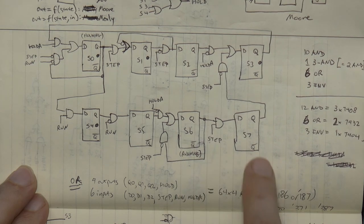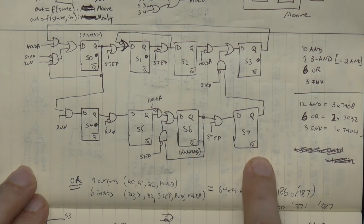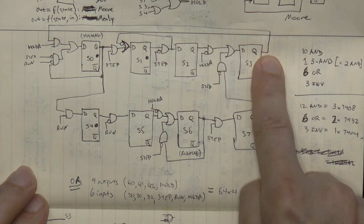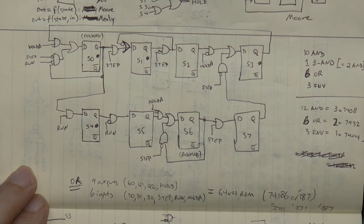Only when I hit step will I go to state 7. And when I release step, I go to state 3, which asserts hold. And there you have it.